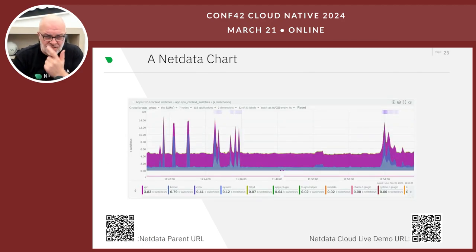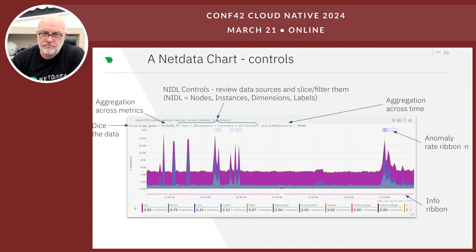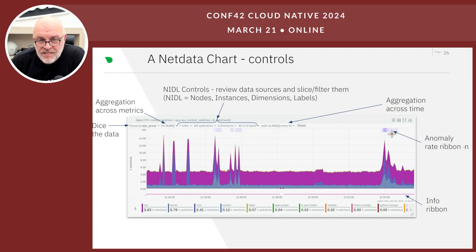Let's look at a NetData chart. It looks like any chart from any monitoring system, but there are differences. The first is an anomaly ribbon at the top of the chart, which shows how many samples were anomalous across time. You can see that at certain moments there were anomalies and at other moments there were not.